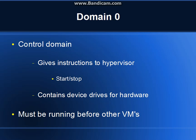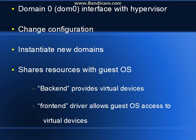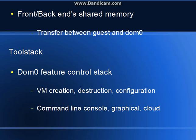Domain 0 must be running before any other virtual machines can run, and in fact Xen won't run without domain 0 running. Domain 0 interfaces with the hypervisor and it can be used to change the configuration of Xen and instantiate new domains, and shares resources with the guest OS's. The back end provides virtual devices to be used by the guest domains and the front end drivers allow these guest OS's to access these virtual devices. The front and back ends share memory and the transfer is actually fairly quick between the guest and domain 0.